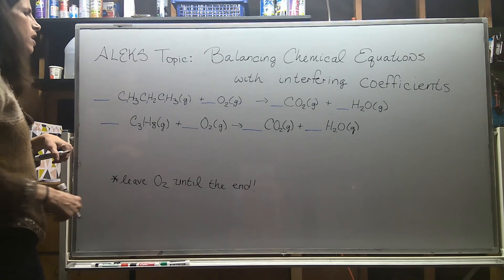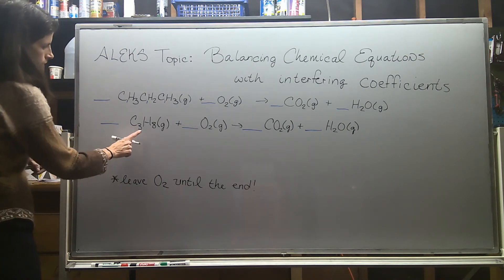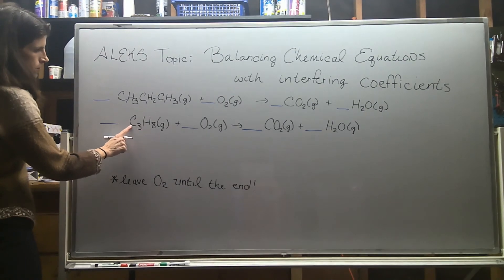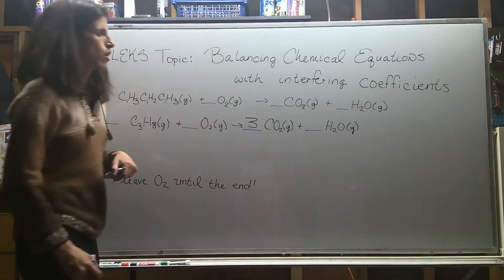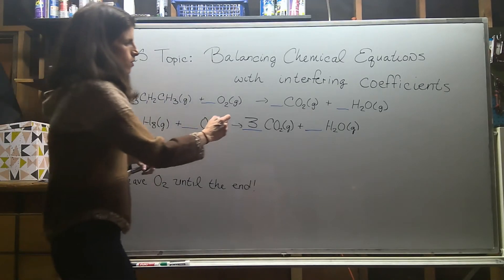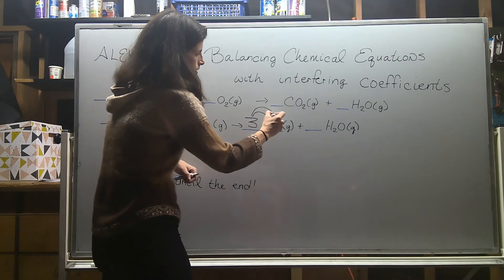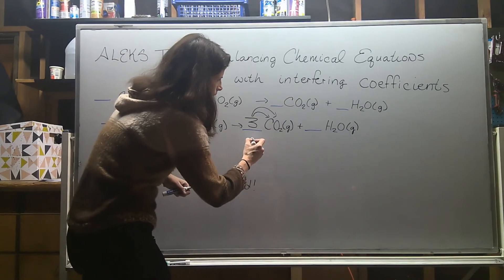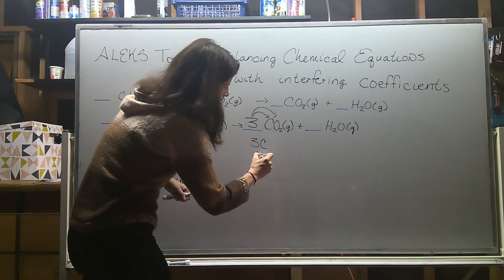Let me start with carbon. So on this side I have three carbons, so I'll put a three in front of the carbon dioxide. When I put the coefficient out front, that gets distributed to everything inside. So now on this side I have three carbons and six oxygens from that carbon dioxide.